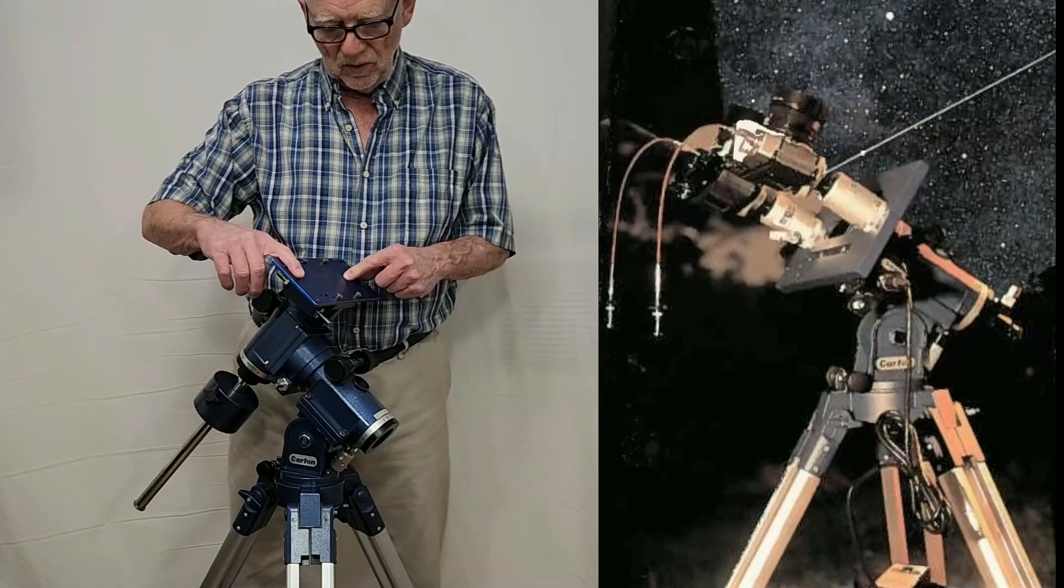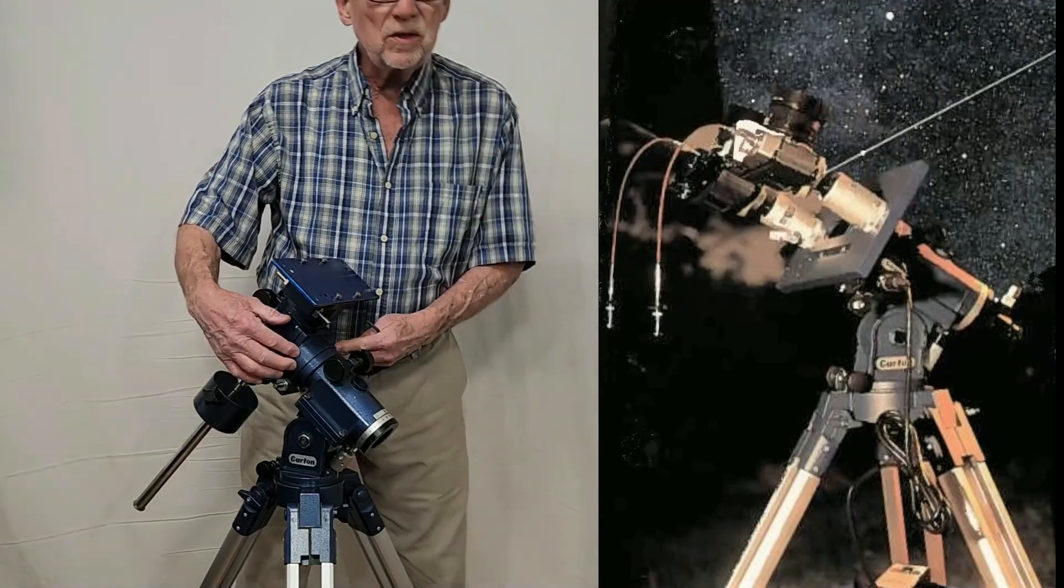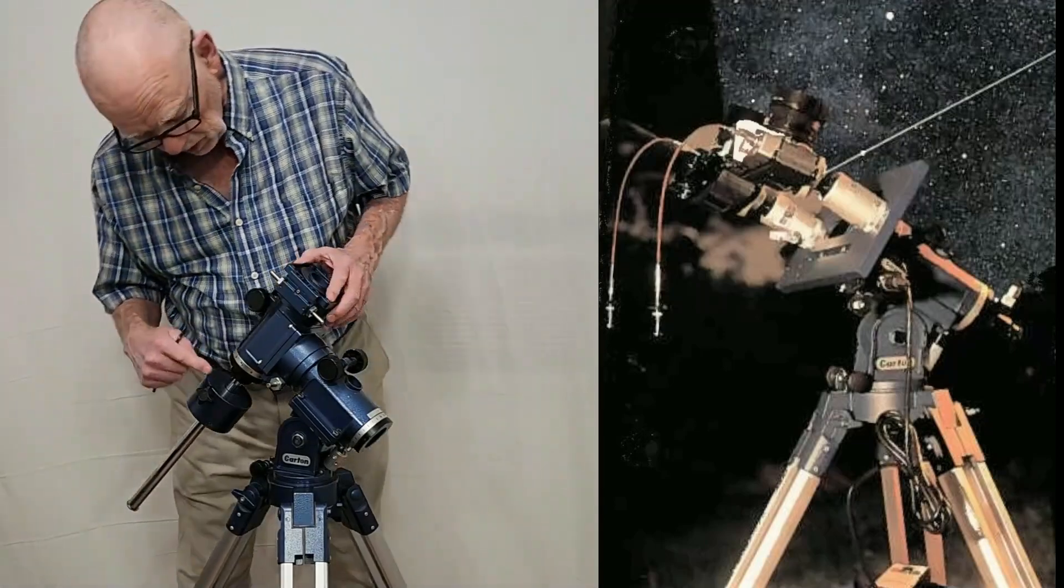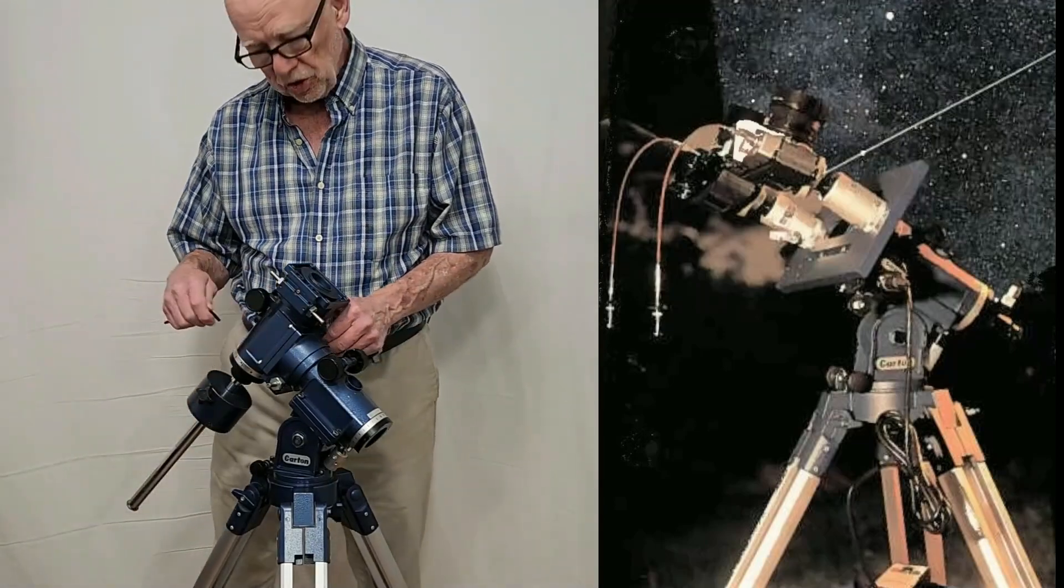We can also remove this plate and mount it straight to the RA axis. Now that the plate's off, we have to remove the declination axis.